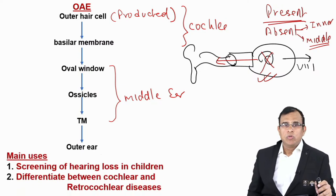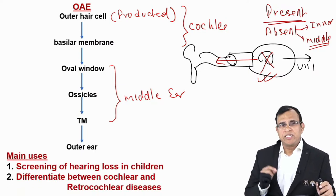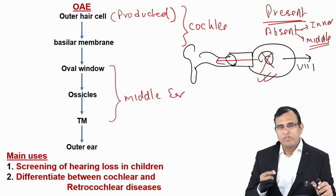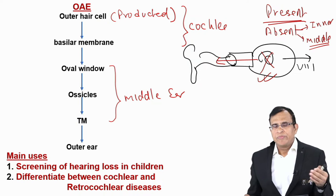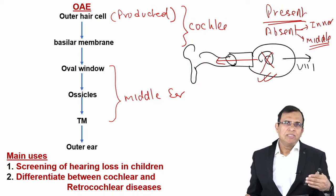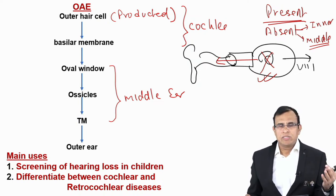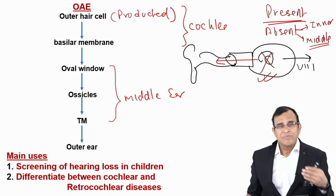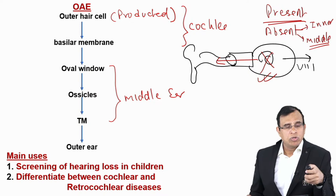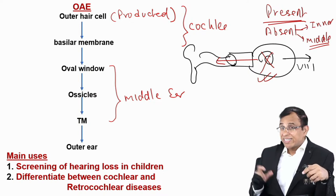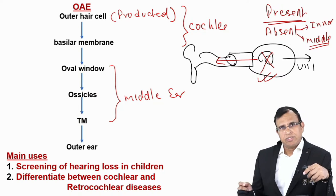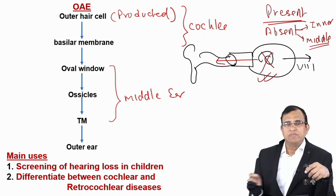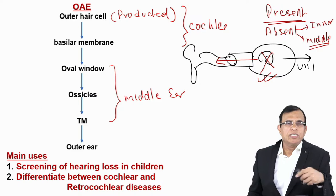There are two aims of OAE: first, screening of hearing loss in children; second, to differentiate cochlear disease from retrocochlear disease — whether the disease is in the cochlea or the eighth nerve. In adults we can do pure tone audiometry for screening since it is subjective and adults can respond, but in children we use OAE.